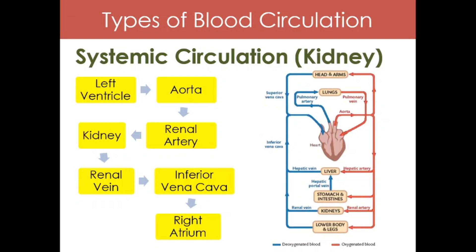Another example is the kidney. Same pathway: starting from the left ventricle, oxygenated blood goes to the aorta, then carried by the renal artery to the kidney. The oxygen and nutrients are delivered to the kidneys, and then the kidney returns carbon dioxide and metabolic waste — making the blood deoxygenated. The deoxygenated blood goes to the renal vein, then to the inferior vena cava — inferior, because the kidneys are in the lower part of the body — and then the blood is received by the right atrium.